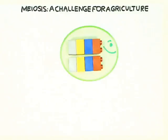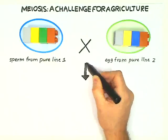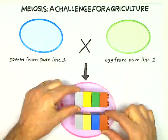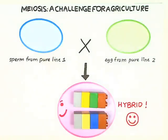For some crops, this is the end of the story. But for other crops, such as corn, two different pure lines are crossed to produce hybrids. And such hybrids are by far more productive and more vigorous than their parents. In this case, meiosis makes it impossible to preserve the optimal combination of genes when hybrids are crossed, and hybrid varieties must be produced by crossing pure lines every year.